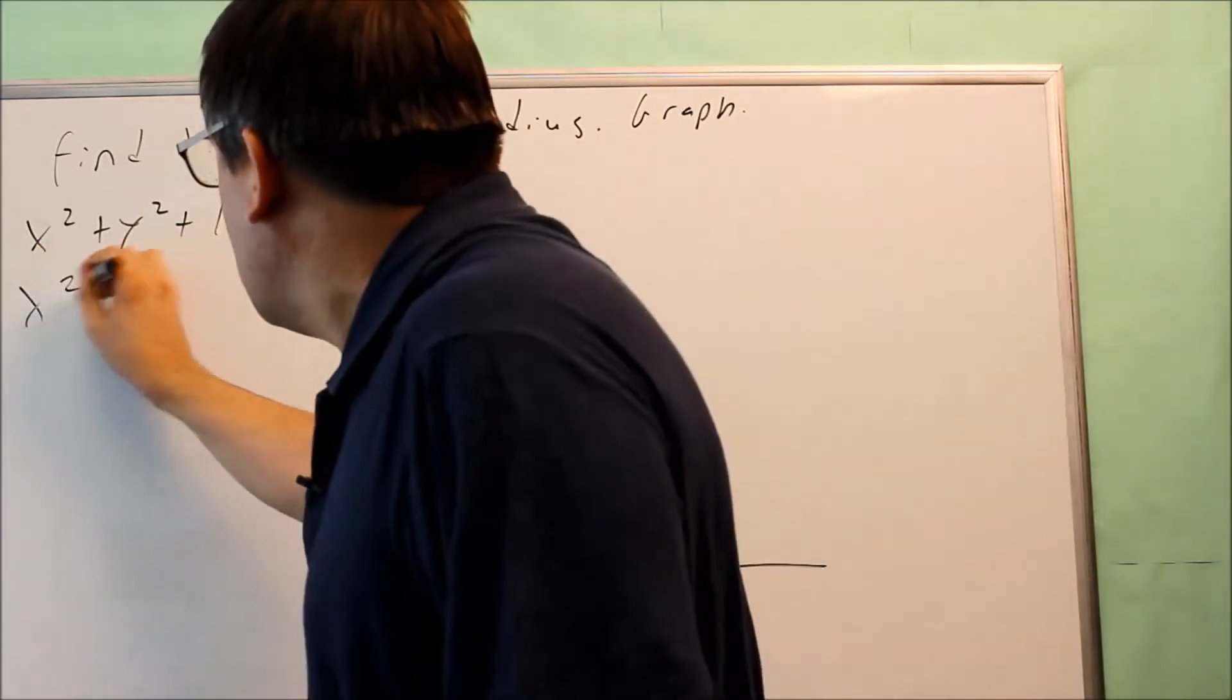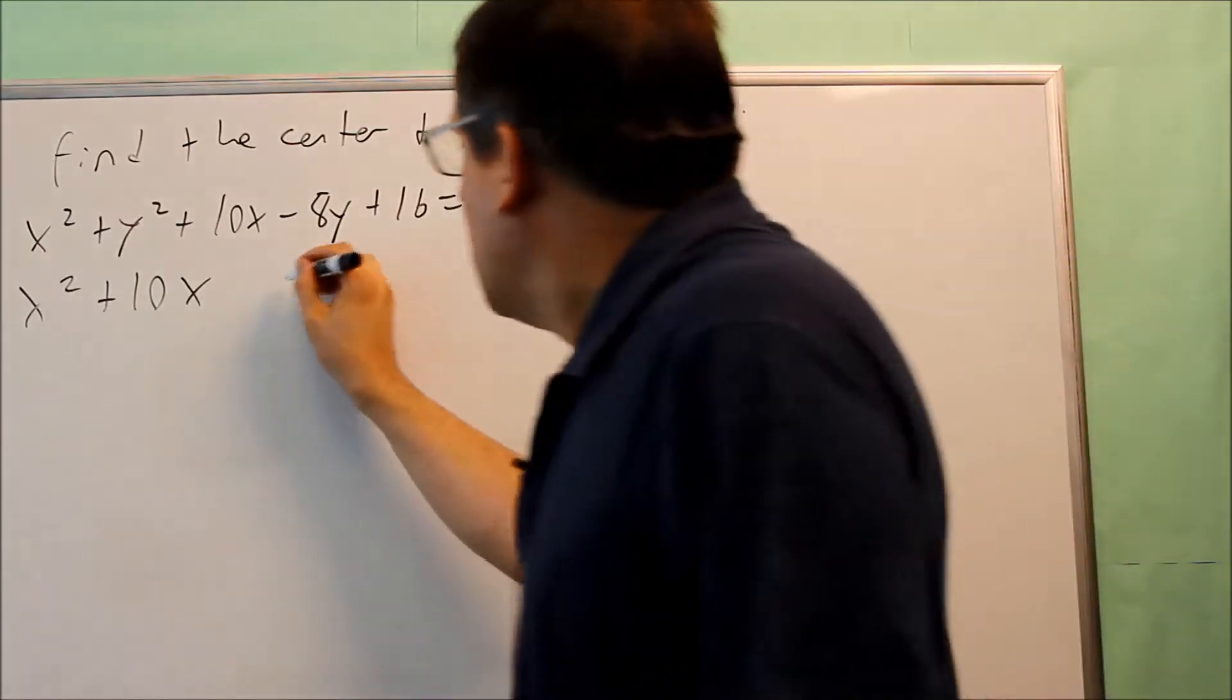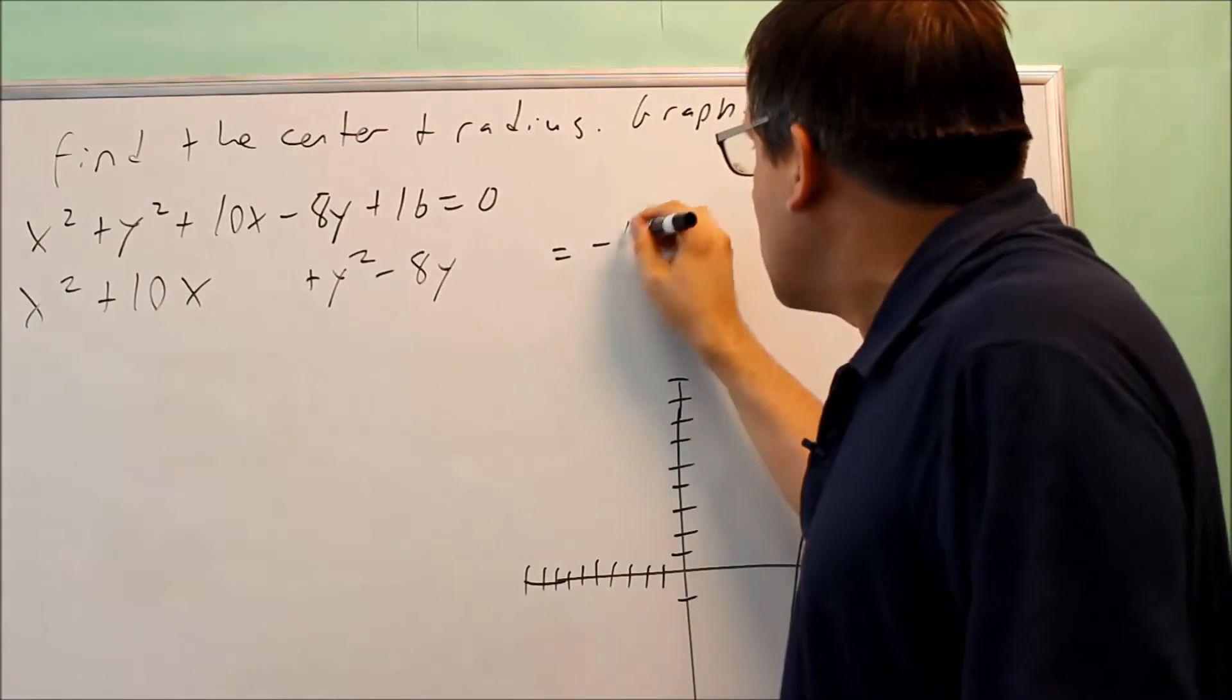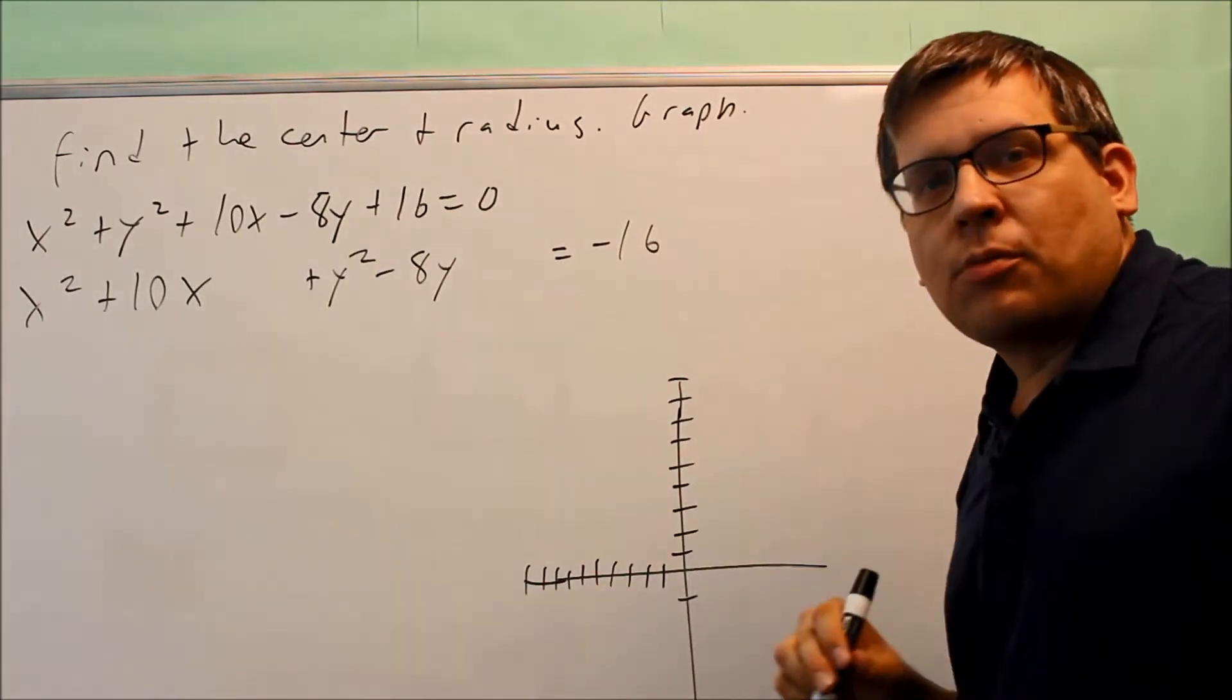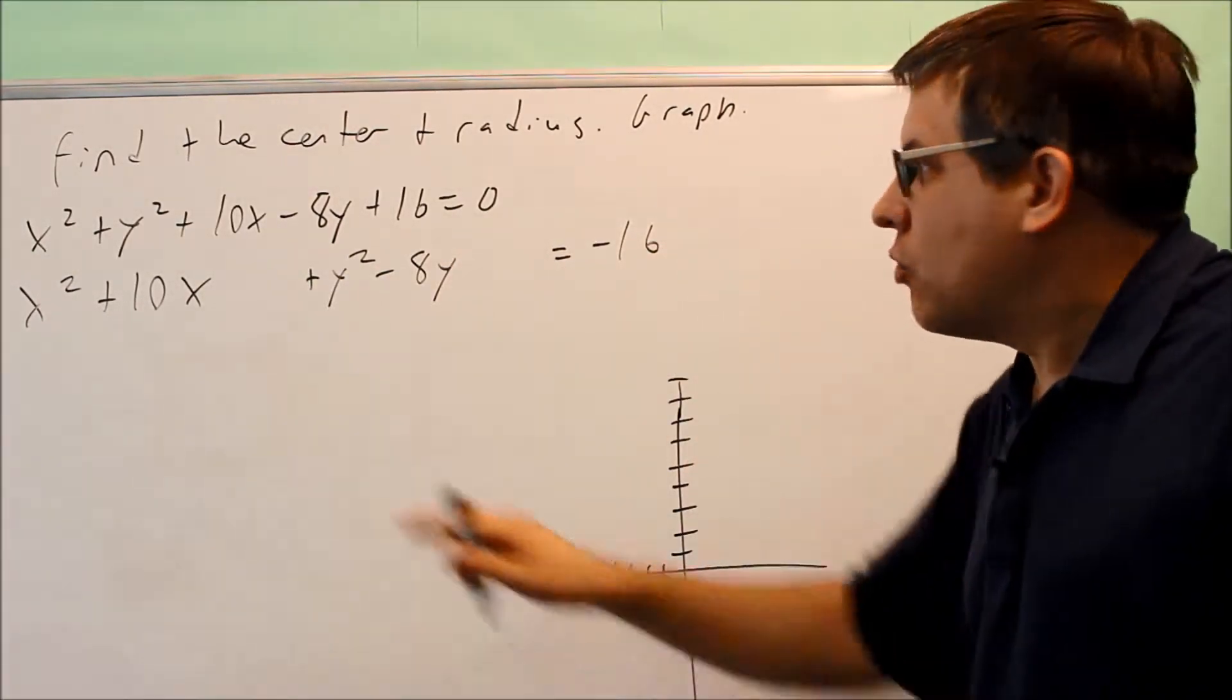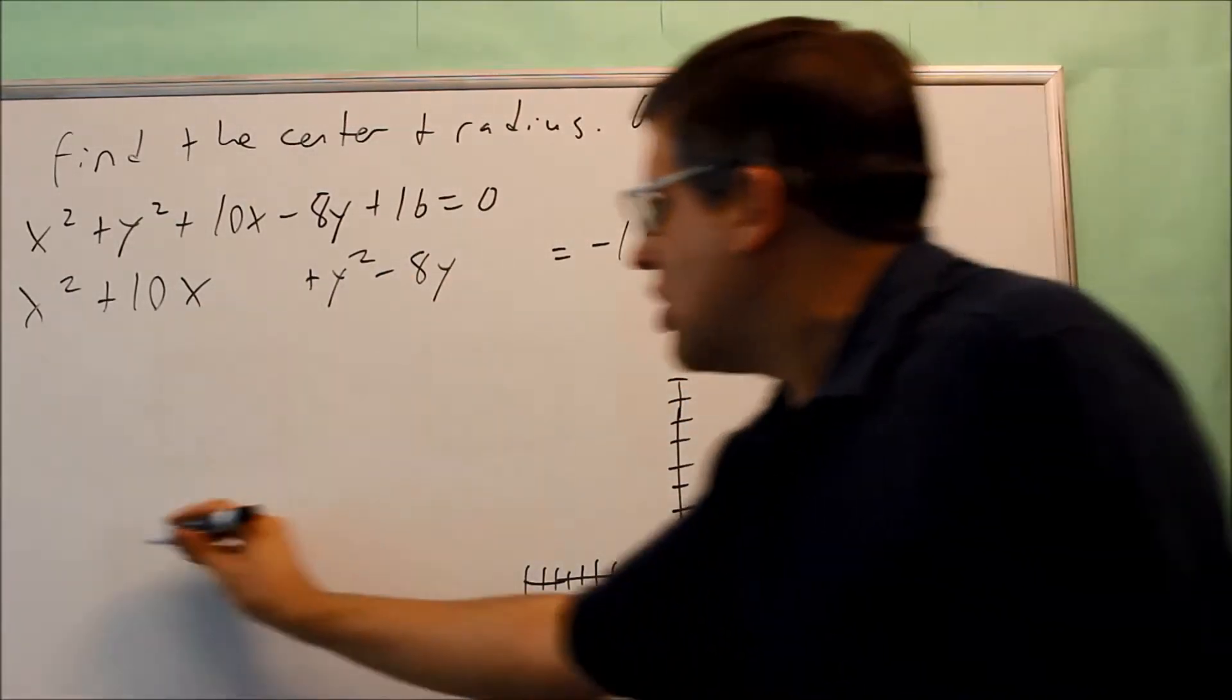So what I'm going to do is I'm going to rearrange some terms. So I'm going to put the x's together. I'm going to leave a space here. And then I'll put the y's together. And then the 16, I'm going to bring that over to the other side of the equation. I'm leaving spaces in here because when I go through the complete the square steps, I'm going to end up getting numbers that I'm going to add to both sides of the equation. They're going to go in these spaces. So I'm going to do the complete the square step down over here.